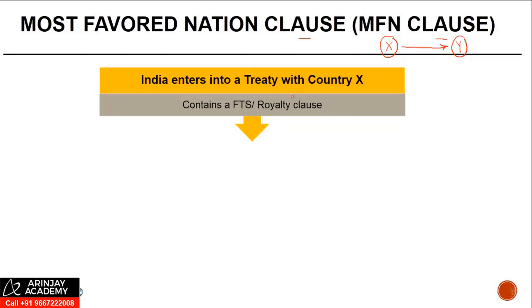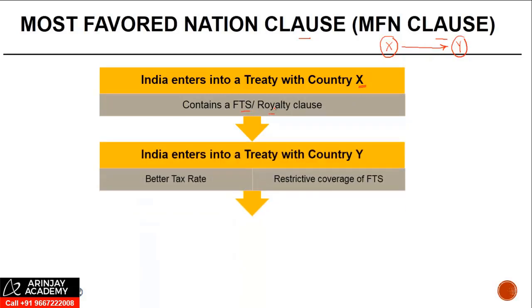For example, India enters into a treaty with Country X, which contains a clause relating to royalty and FTS. Subsequently, India enters into a treaty with Country Y, and the rate of royalty taxation here is 15%. In this new treaty that India has entered into, it says the rate of taxation will be 10%, or there's a restrictive coverage of FTS.